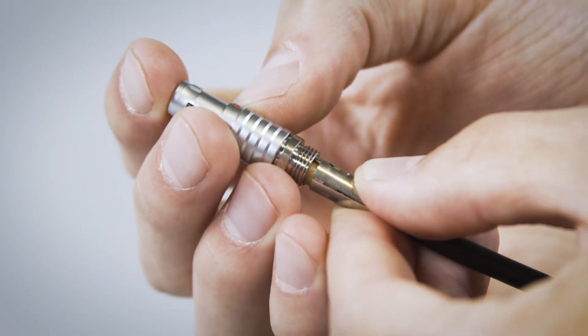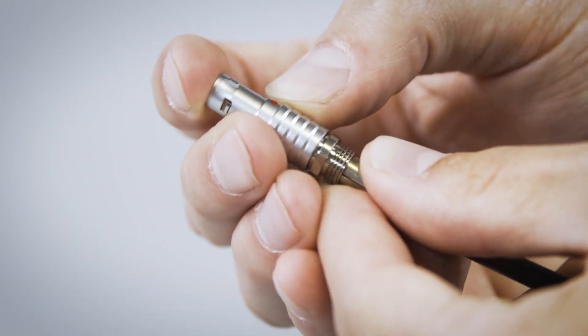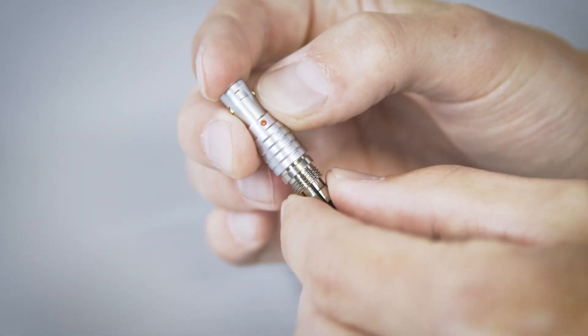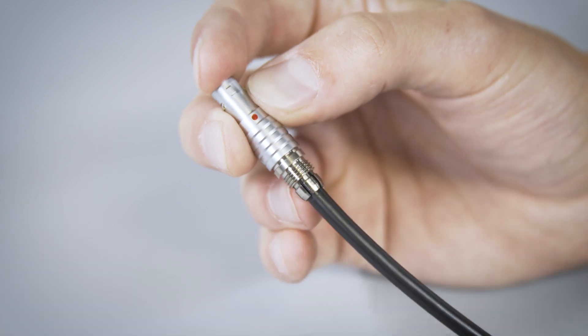Feed the inner connector into the outer shell with the key and red dot in alignment. Slide the collet into the outer shell. Make sure the key is aligned with the red dot.